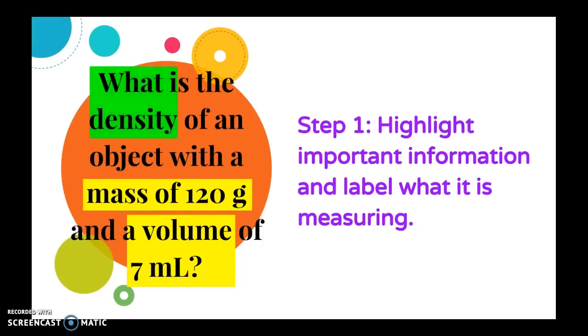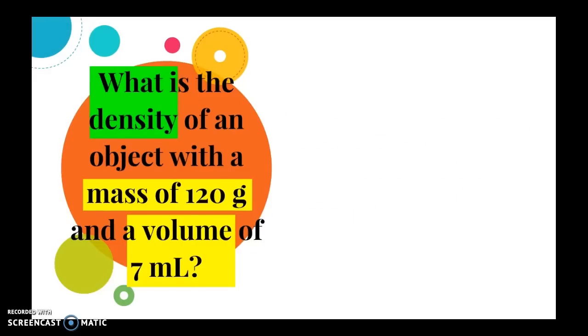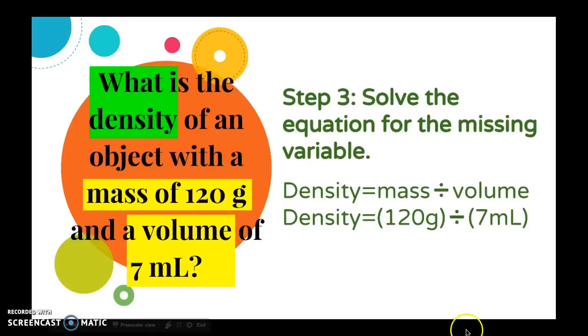The second step is to plug in your values into the density equation or the visual. I personally like the visual. So I put mass of 120 grams, so just 120, up at the very tippy top of that circle. In the lower right hand corner, I'm going to put 7 milliliters. And then density will be what I'm looking for. So essentially your equation is going to be mass divided by volume, as shown here, in order to find density.